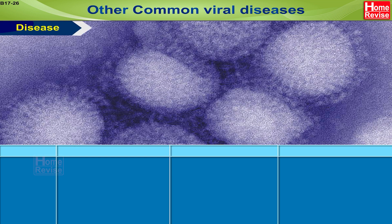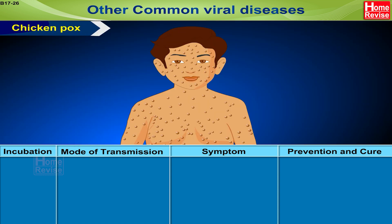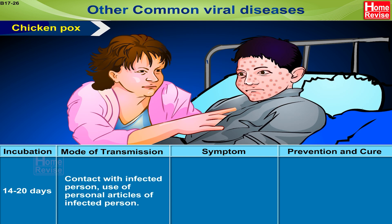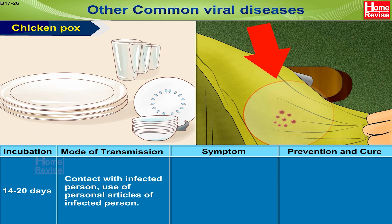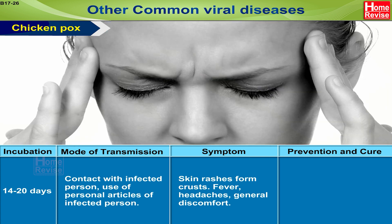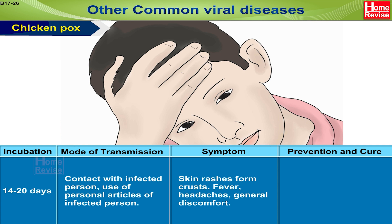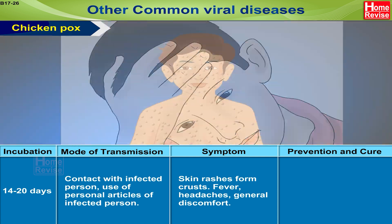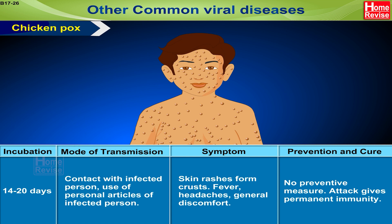Other common viral diseases. First, chicken pox: incubation period is 14 to 20 days. Mode of transmission is contact with an infected person or use of personal articles of an infected person. Symptoms include skin rashes that form crusts, fever, headaches, and general discomfort. Prevention and cure: no preventive measures; however, an attack gives permanent immunity.